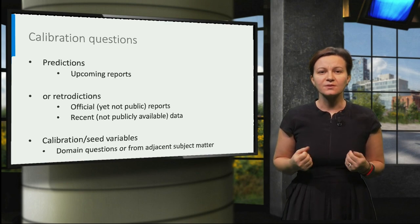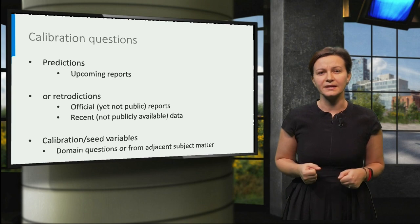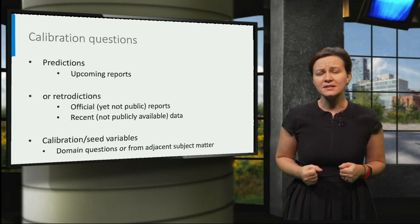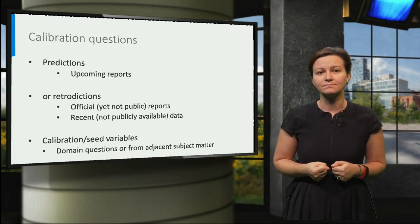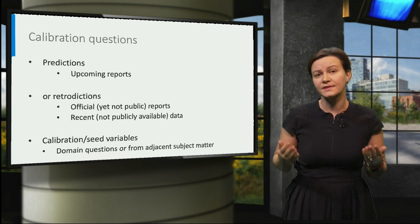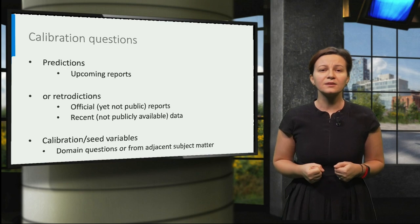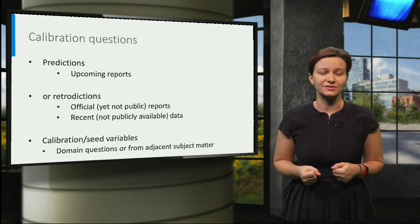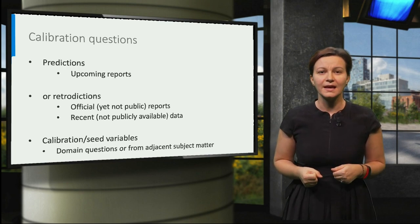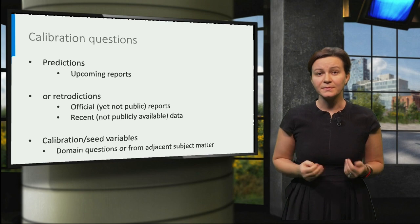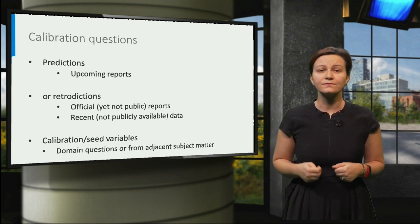Sometimes, the calibration questions cannot be chosen from the same domain as the questions of interest. This can be simply due to the fact that there are no available data yet for that given domain — think about newly developed drugs or technologies, for example. In this case, an adjacent domain is chosen for developing calibration questions.